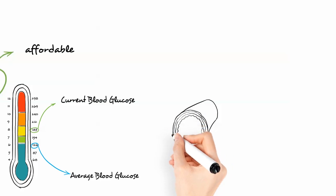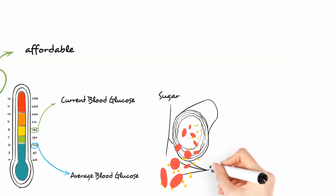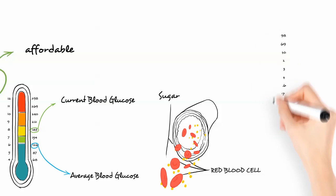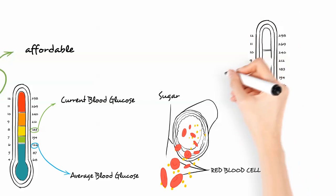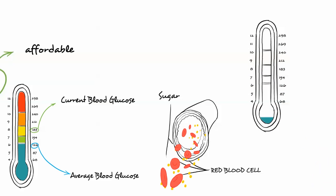You see, the A1c test measures the amount of sugar that attaches to protein in the red blood cell. Because red blood cells live for about 90 days, the A1c test shows your average blood sugar over that same time. The greater the amount of sugar in your blood, the higher your HbA1c results will be.